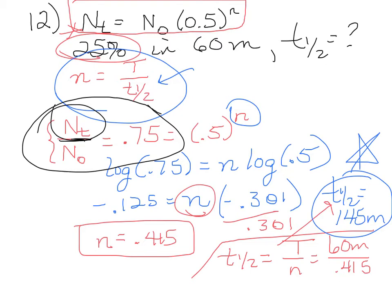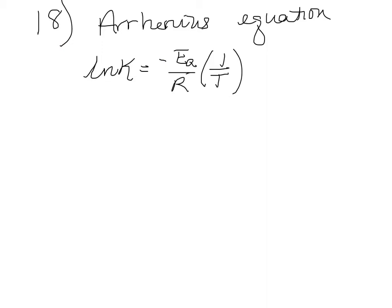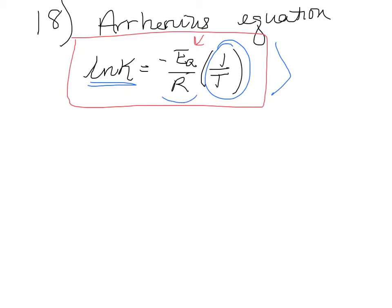I'm going to work number 18 now. Number 18 is a question that you would use the Arrhenius equation to solve. And how do I know that? Because it asks for energy of activation. But also, any time you see a plot of the natural log of the rate constant versus 1 over T, you should get a straight line with the slope equal to minus activation energy divided by R, which is the gas constant. And in this case, since you're talking about energy and you want units of joules, the gas constant that you want to use with the correct units is 8.314.